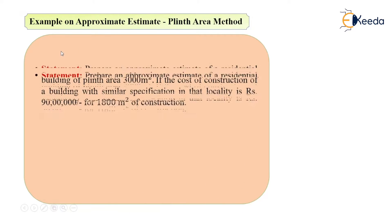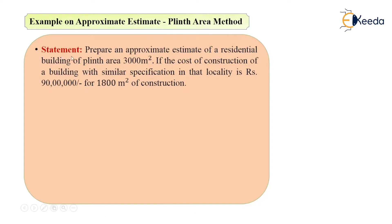The problem statement is: prepare an approximate estimate of a residential building with a plinth area of 3000 meter square, if the cost of construction of a building with similar specifications in that locality is Rs 90 lakh per 1800 meter square of construction.